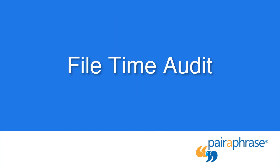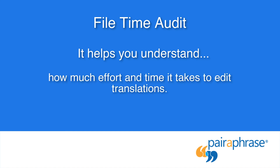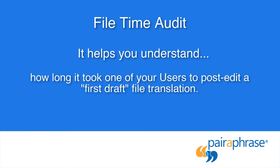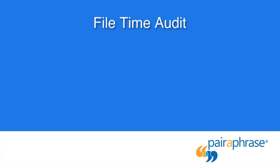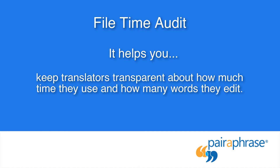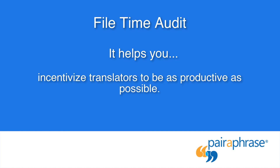The File Time Audit page helps you understand how much effort and time edited translations take. It tells you how much time someone spent post-editing a first draft file translation. You can also see how many words and segments they changed out of the total words and segments for each file. The File Time Audit keeps translators transparent about how much time they use and how many words they edit, and is also an incentive for them to be more productive.